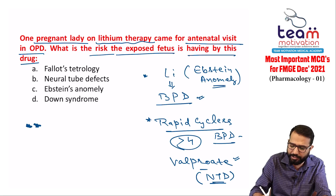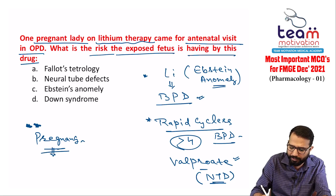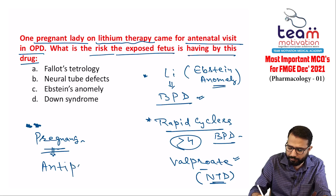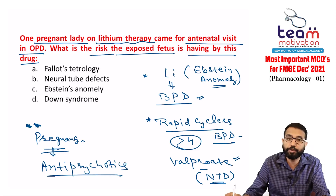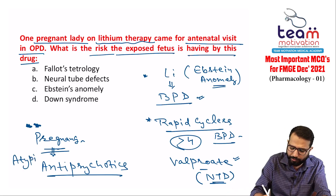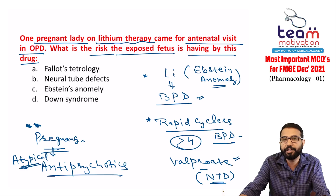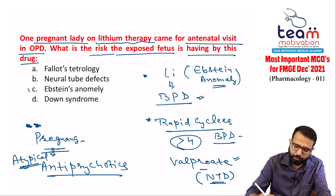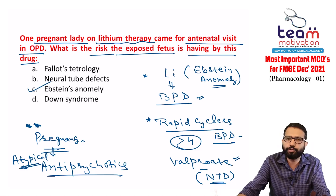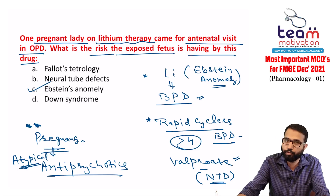If the patient is pregnant, these two drugs cannot be used. The best alternative is atypical antipsychotics. The most preferred drug during pregnancy for mania or bipolar disorder is atypical antipsychotics like quetiapine and aripiprazole. Due to lithium: risk of Ebstein's anomaly. Due to valproate: risk of neural tube defect.